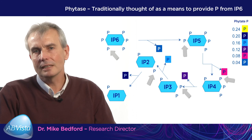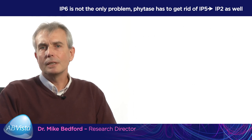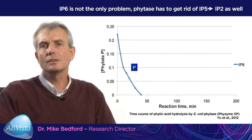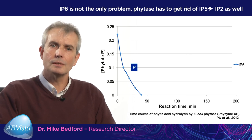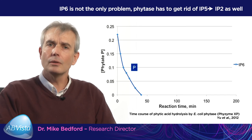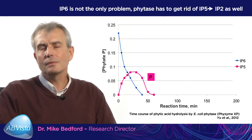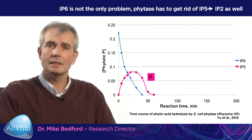We need to stop considering phytases as simply a means of delivering phosphorus. From these slides showing the rate of destruction of IP6, you can see a very rapid reduction in the concentration of IP6 when a phytase is used. In fact, within 40 minutes all of the phosphate in this study was removed from IP6, producing IP5, which can be seen on this slide in the red line. IP5 is produced very rapidly from the breakdown of IP6, but it only reaches a small peak at which point it then starts to drop in concentration, because the enzyme even more rapidly attacks IP5 than it was attacking IP6.